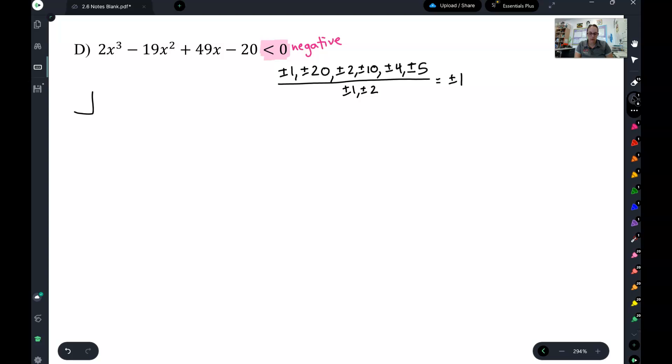1 divided by 1 is 1. 1 divided by 2 is 1 half. 20 divided by 1 is 20. 20 divided by 2 is 10. 2 divided by 1 is 2. 2 divided by 2 is 1, which I already have on the list. 10 divided by 1 is 10, which I've already got.